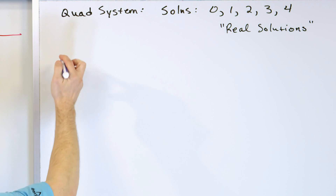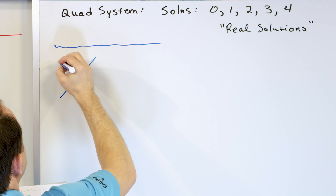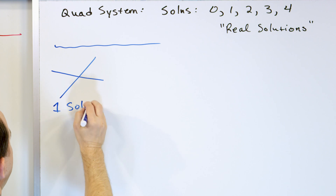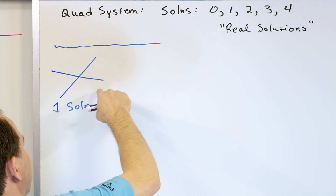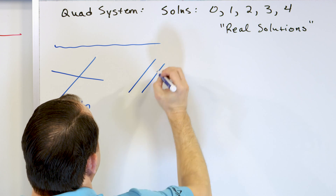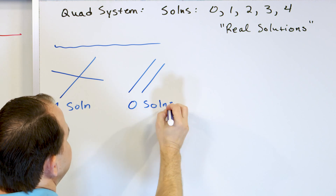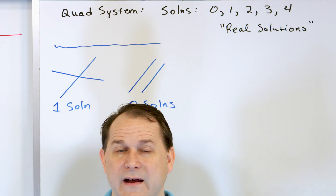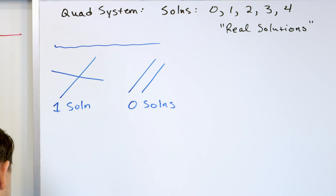Let's take a trip down memory lane with some simple cases. If we have two lines that cross, there's one solution — one intersection point common to both lines. That point satisfies both equations, so it is the solution. What if you have a line and a parallel line? Those lines never cross, so we have zero solutions. It just means the graphs don't cross and there's no commonality between the two.